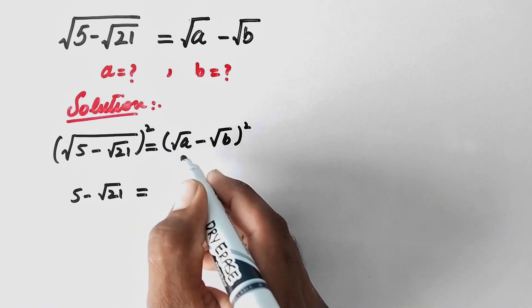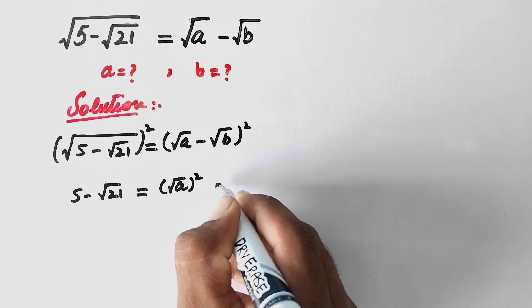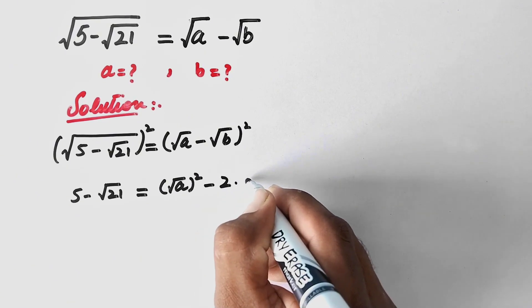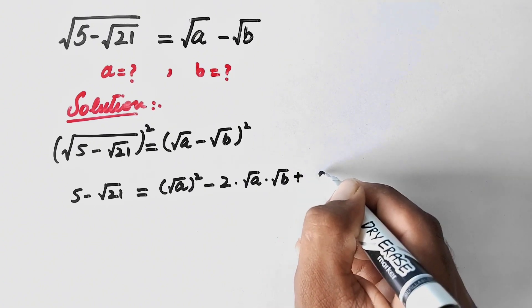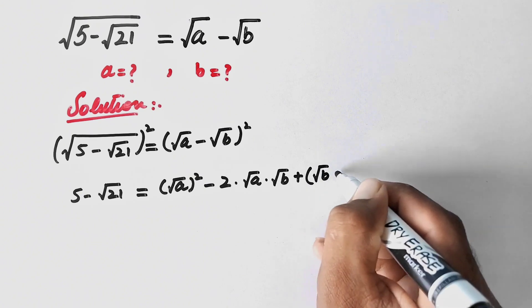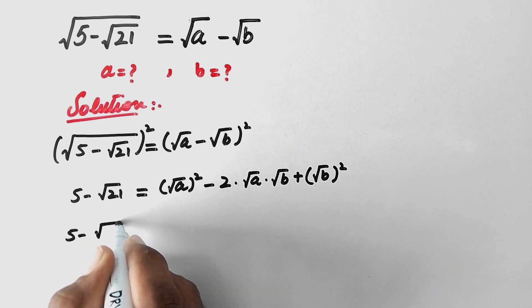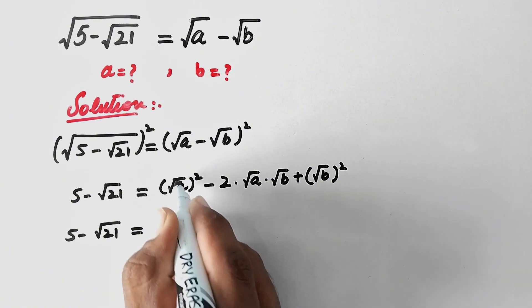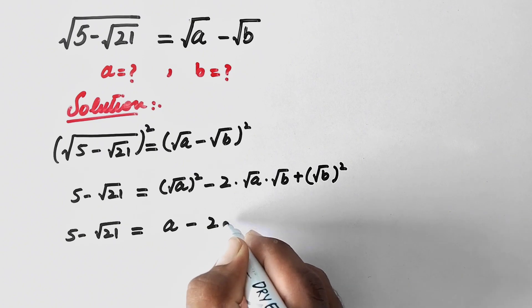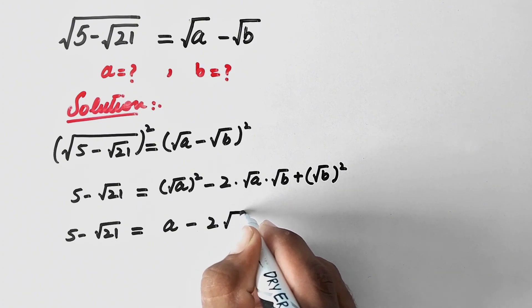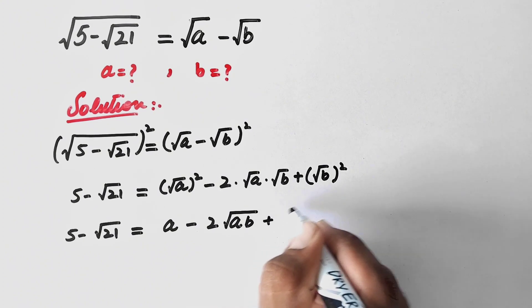We will open this bracket using the algebraic formula. It will be (√A)² - 2·√A·√B + (√B)², which simplifies to A - 2√(AB) + B. So we have 5 - √21 = A + B - 2√(AB).